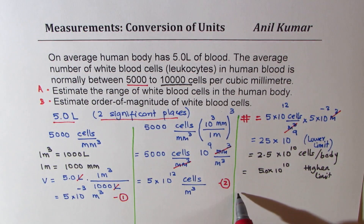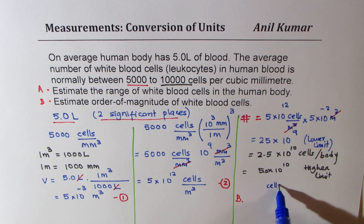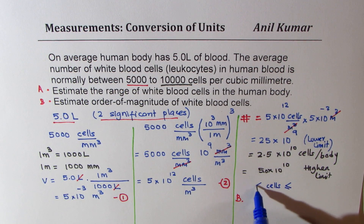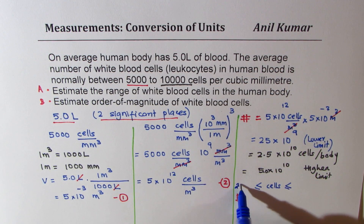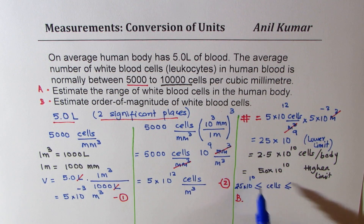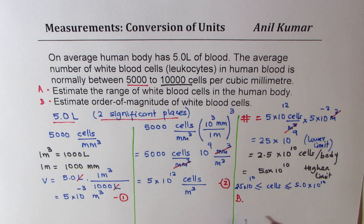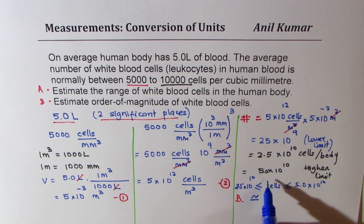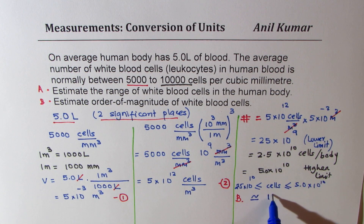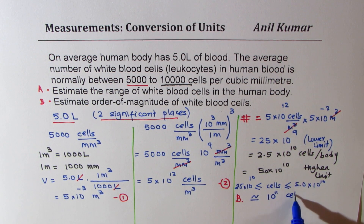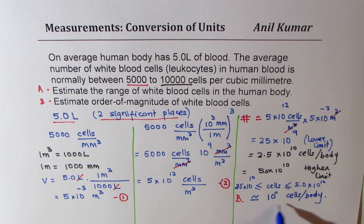For Part B, we need to estimate the order of magnitude. We approximate the upper limit 5 × 10¹⁰ as 10¹¹. So the order of magnitude estimate for white blood cells in the human body is 10¹¹ cells. We use the upper limit for this estimate.